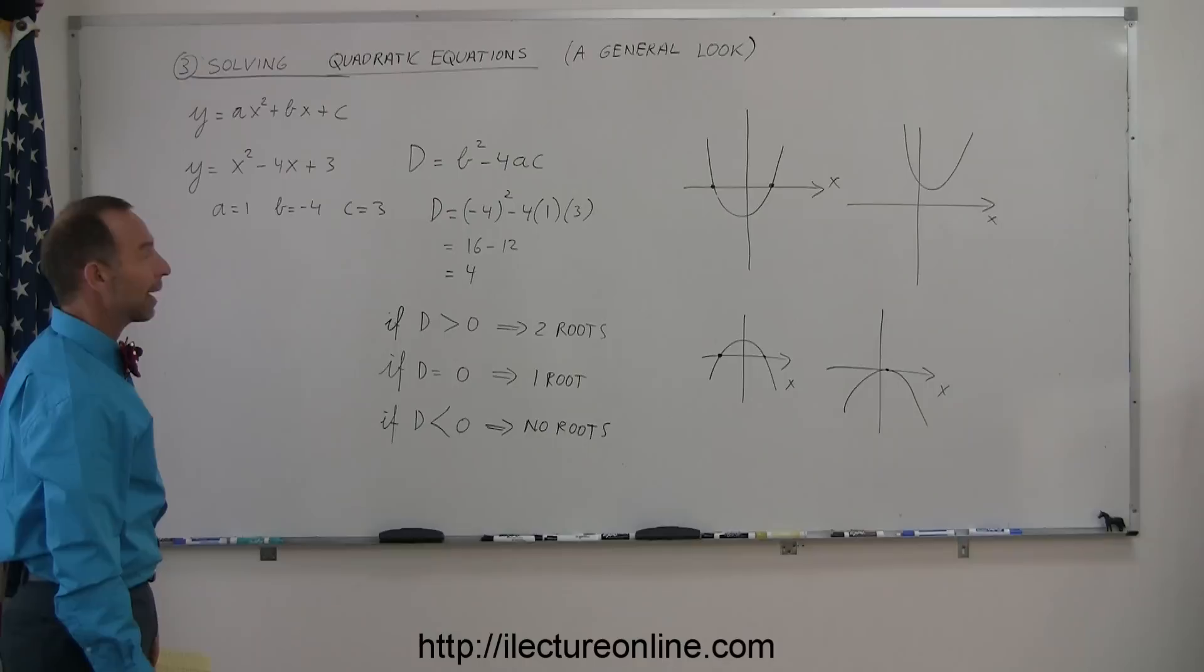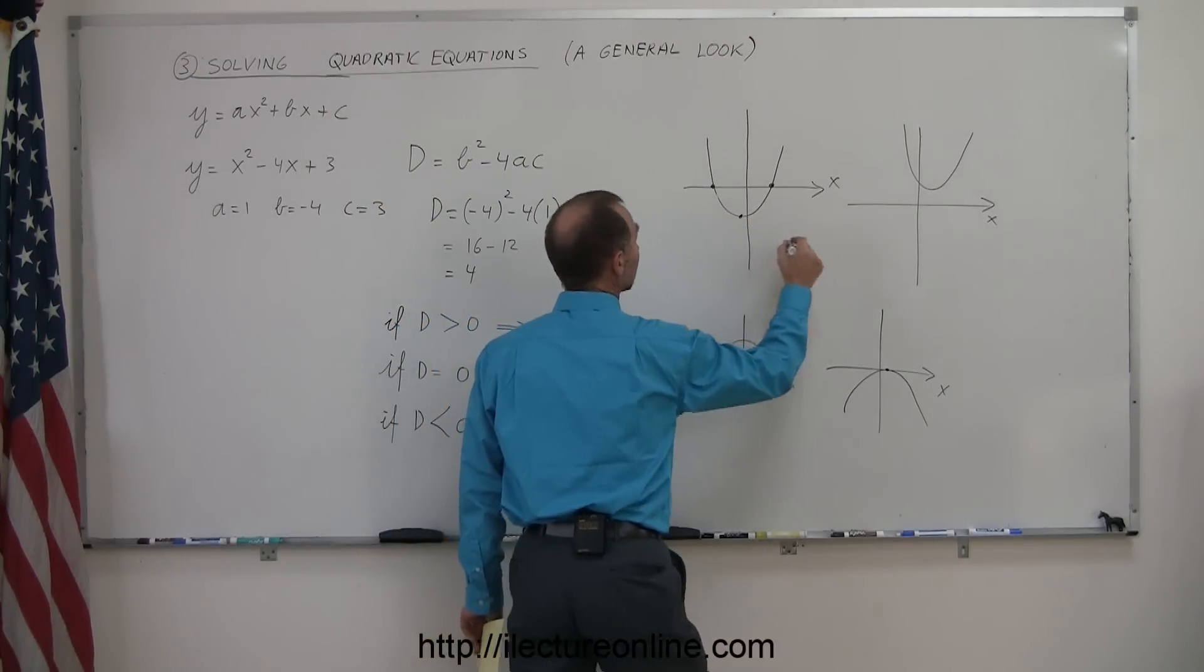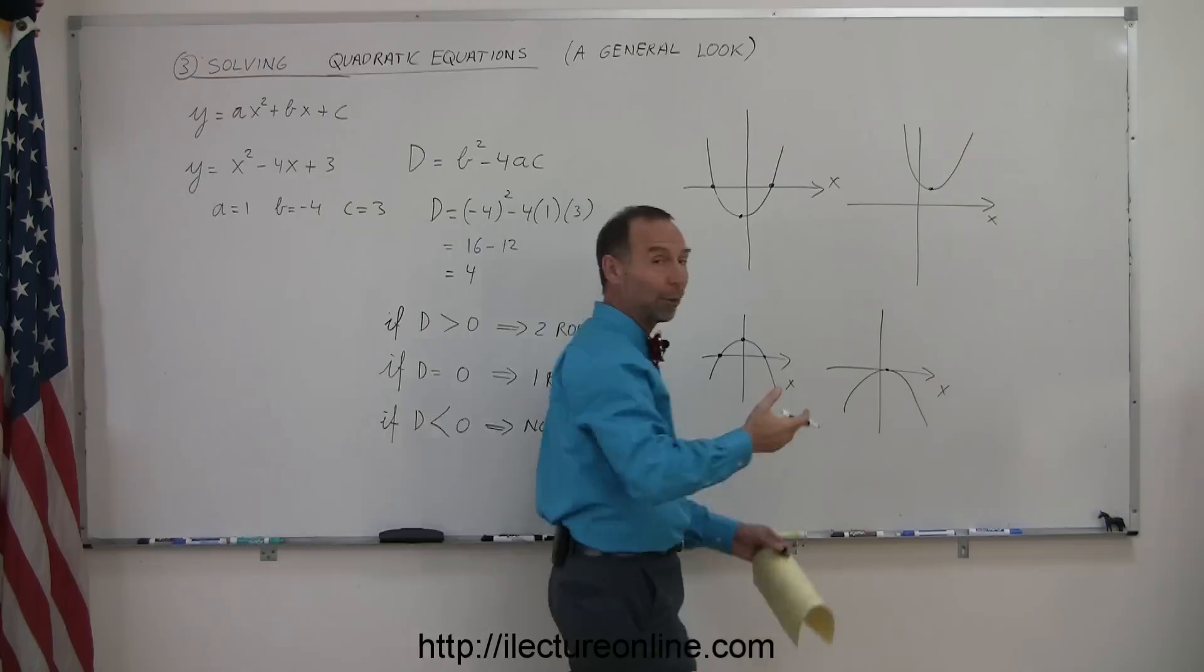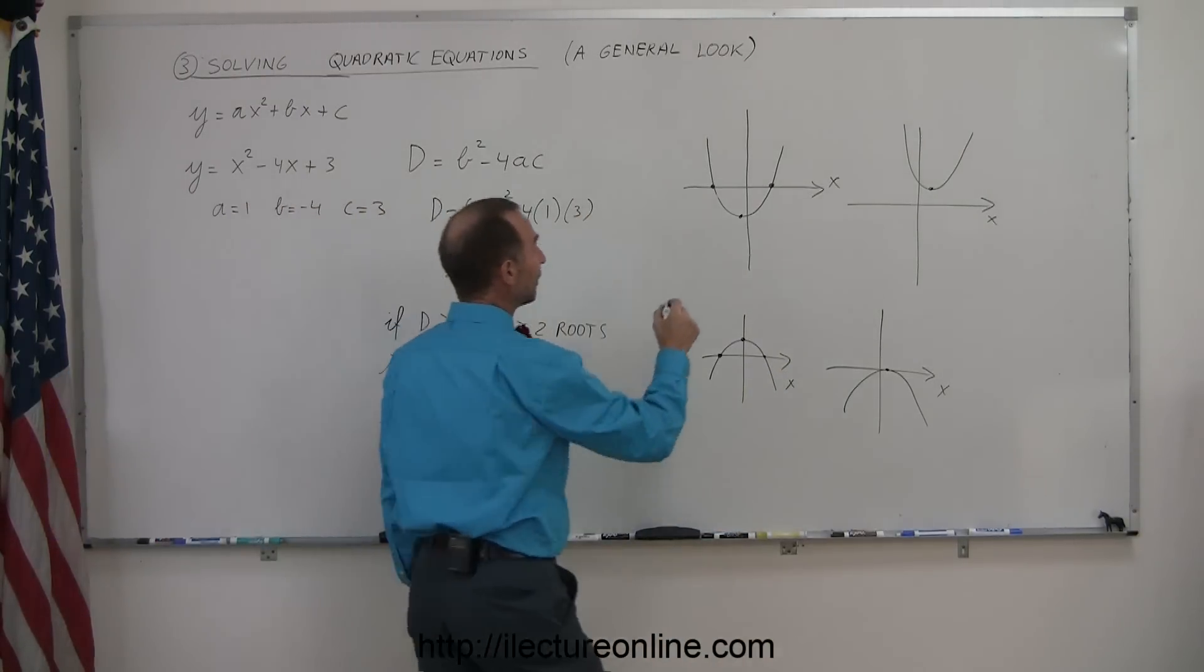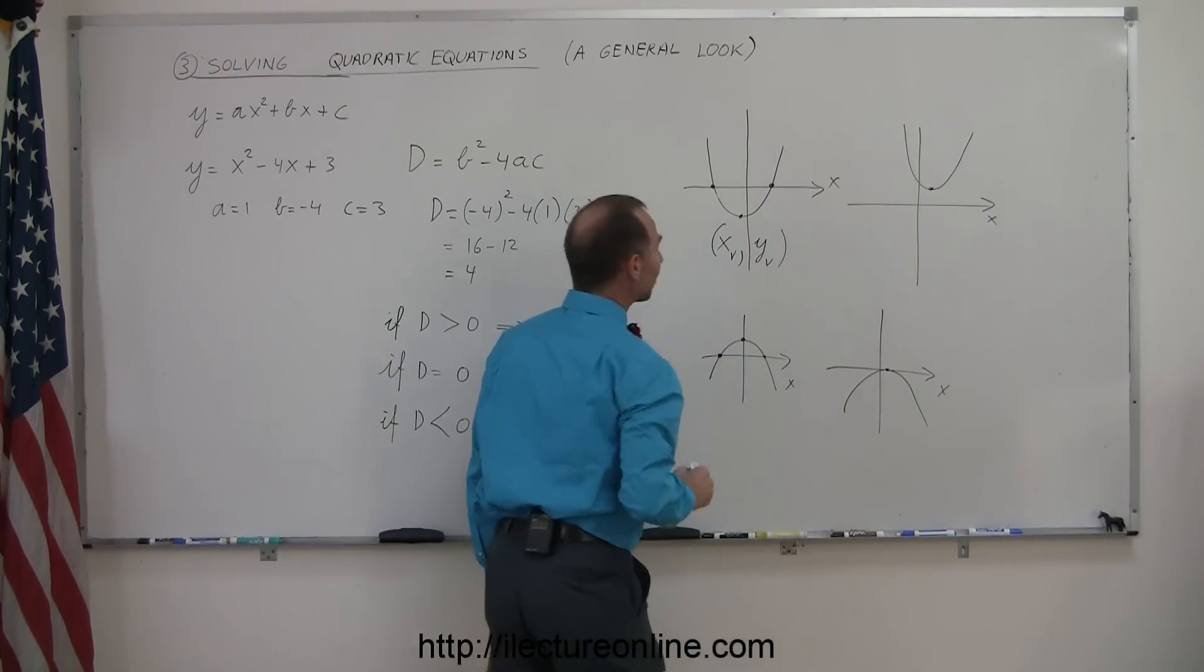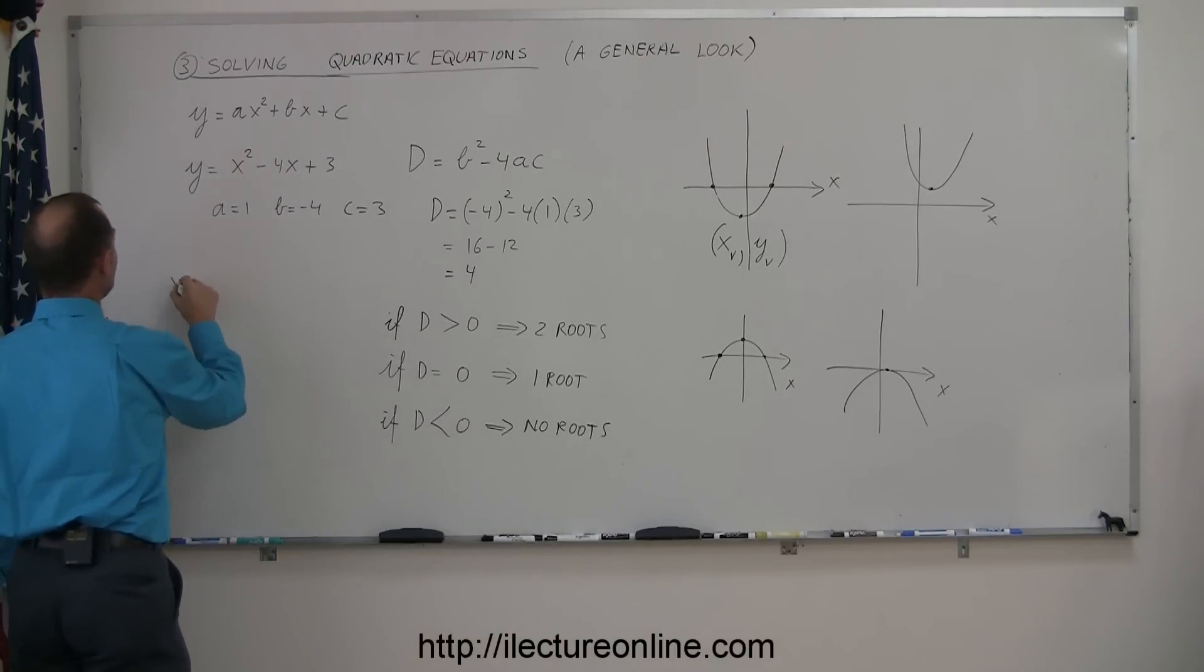All right, another thing that you can figure out is where the vertex may be, the point, the lowest point on the parabola or the highest point, depending upon if it opens upward or opens downward. And the vertex would have an x and a y-coordinate, and if I write the x-coordinate as x sub v and the y-coordinate as y sub v, I could find the x-coordinate of the vertex by simply saying the x-coordinate of the vertex is equal to minus b over 2a.